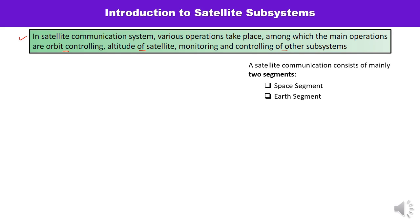A satellite communication system consists of mainly two segments. If you have to understand the overall elements of satellite communication, you can understand it as two segments. One is the space segment and the second is the Earth segment. The space segment means the satellite is in space, so its components or subsystems include the communication satellite itself and satellite payloads.